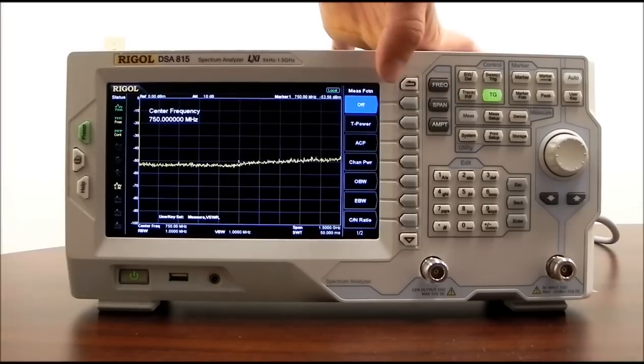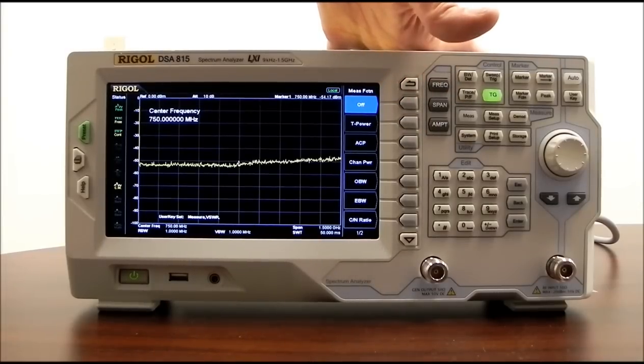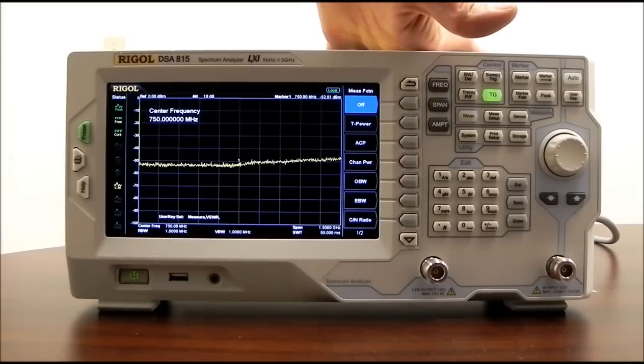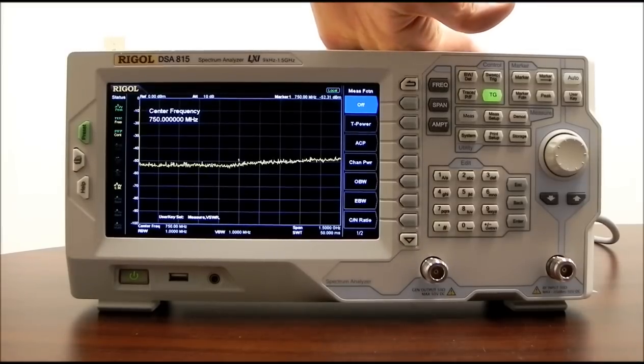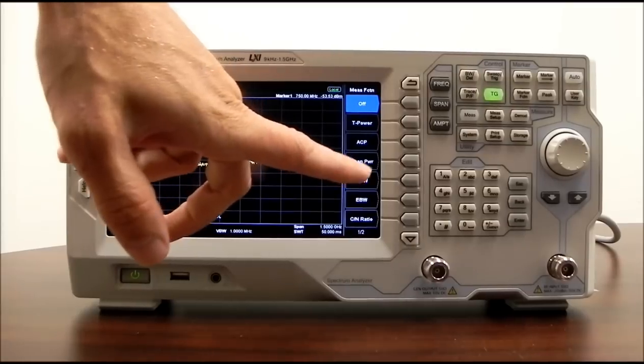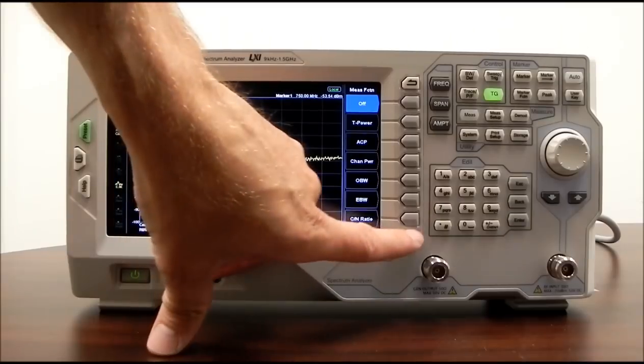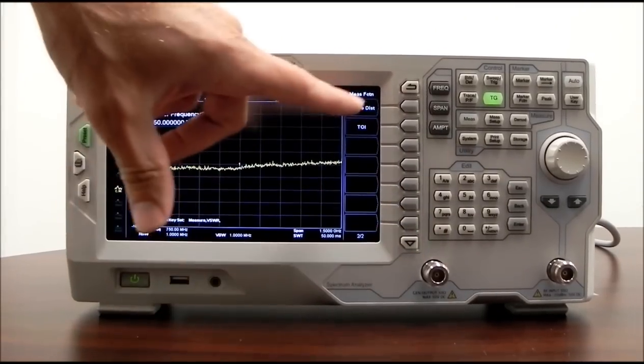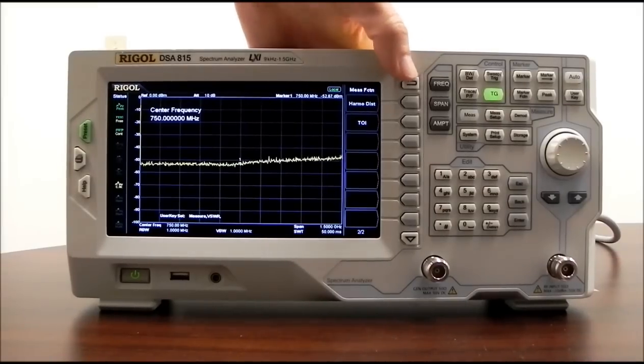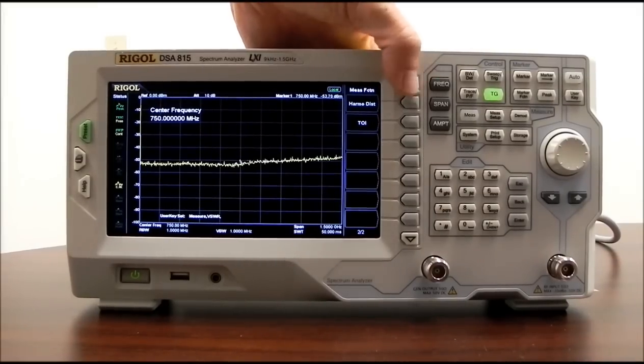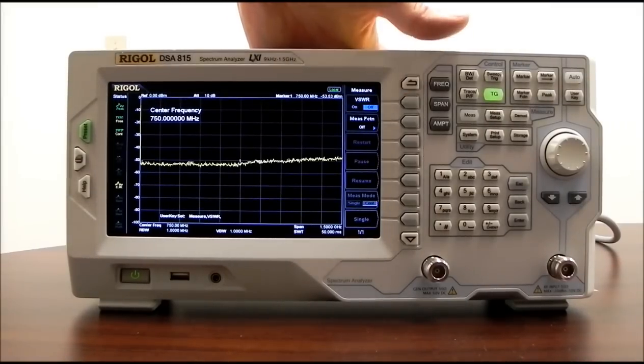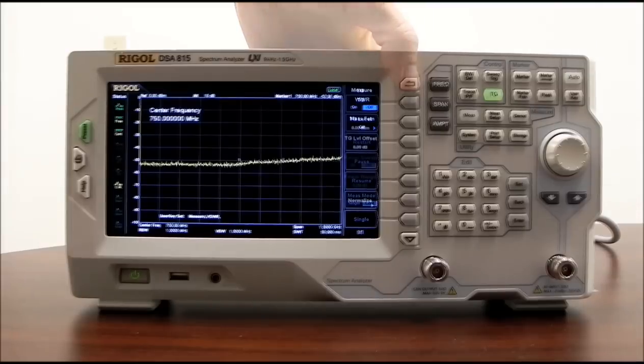And that comes with total power, adjacent channel power, channel power, occupied bandwidth, emission bandwidth, carrier-to-noise ratio, harmonic distortion, CN ratio, harmonic distortion, and third order intercept. So those are some of the available measurements for the AMK option.